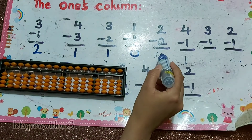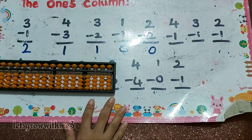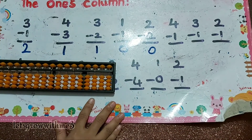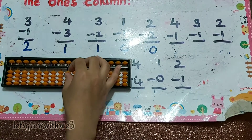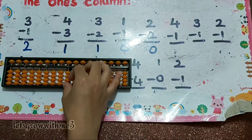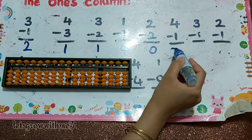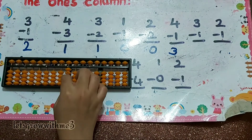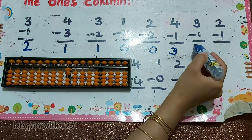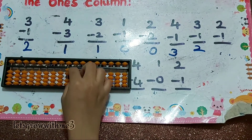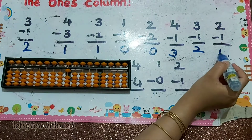2 minus 2 — answer is 0. Are you able to see? Yes. Next: 4 minus 1 — answer is 3. Next: 3 minus 1 — answer is 2. Next: 2 minus 1 — answer is 1.